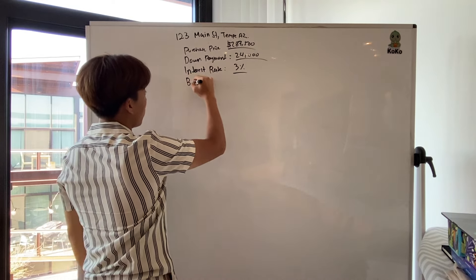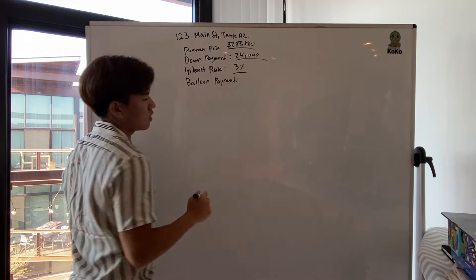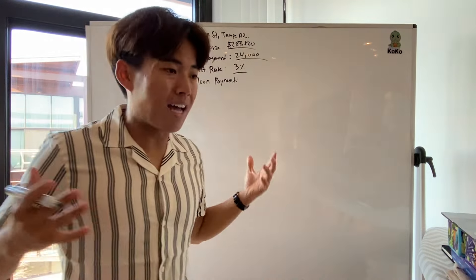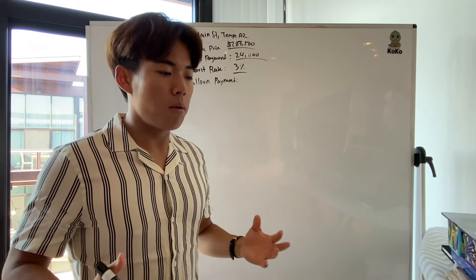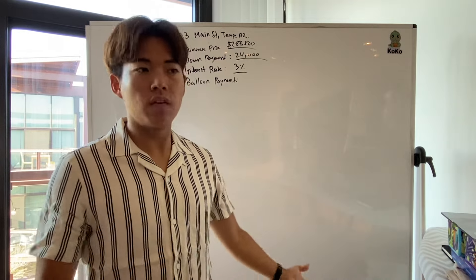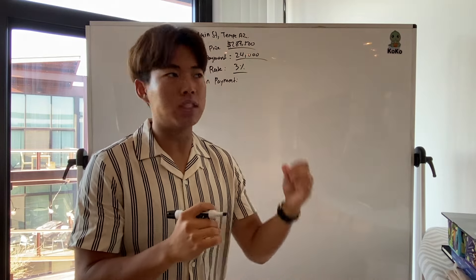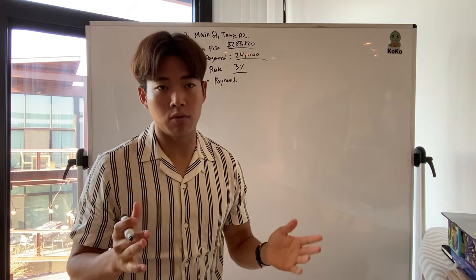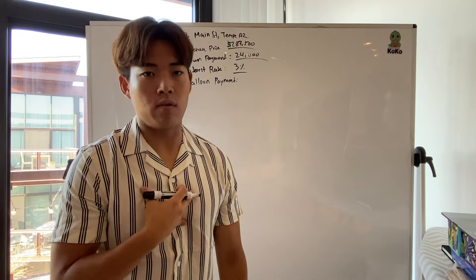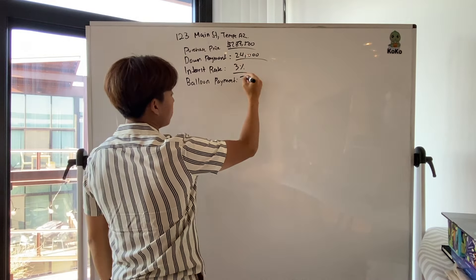And then we also have a balloon payment. Balloon is something you don't talk about on a sub 2 deal as much as you would on a seller finance deal. Balloon is, okay, the homeowner goes, I'm going to sell a finance deal this house. I'm going to be your bank, but I want my money back in 7 years, 10 years, 15 years. So typically, you will schedule this payment for 30 years, but you might have a 5-year balloon, 7-year balloon, and 10-year balloon.